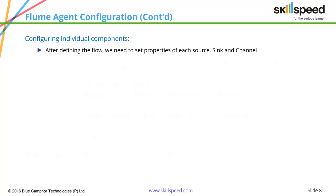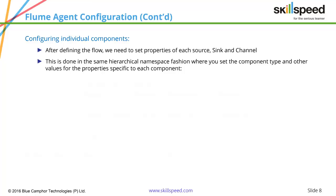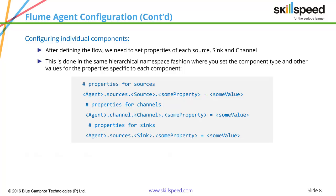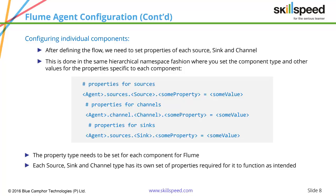After defining the flow, we mention the properties of each source, sink, and channel in the same hierarchical fashion. For example, for source, you write agent.sources.source, some property equals some value — for instance, defining a Twitter API to receive Twitter data as the source. For the channel property, you write channel.channel, some property equals some value — for example, the buffer memory is 100 megabytes. The same way, you can define individual properties for the sink. The property type must be set for each component so Flume understands what kind of object it needs to be.